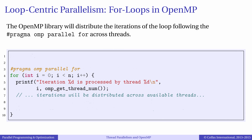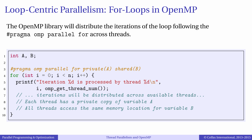Now that we have seen a parallel program with OpenMP, it is important to understand the memory view available to threads. By default, all quantities visible in the scope of the parallel loop are shared between threads. Each thread sees the same value of shared variables. If one thread changes a shared variable, all other threads will see the modification.